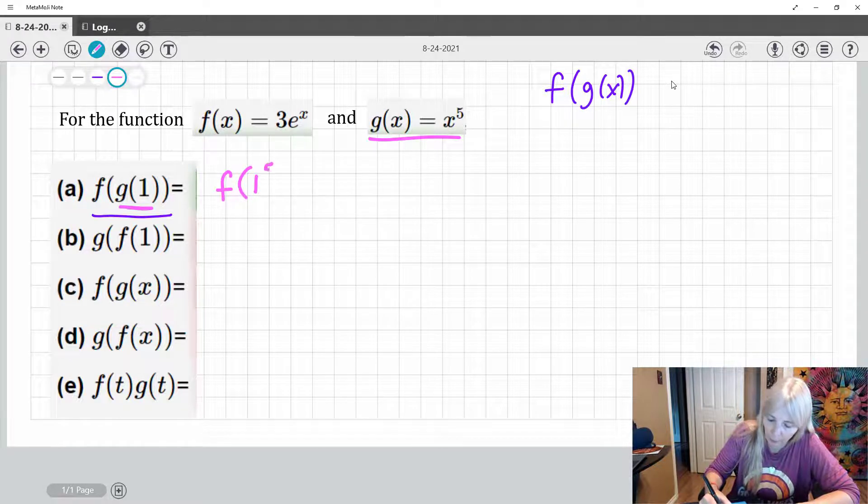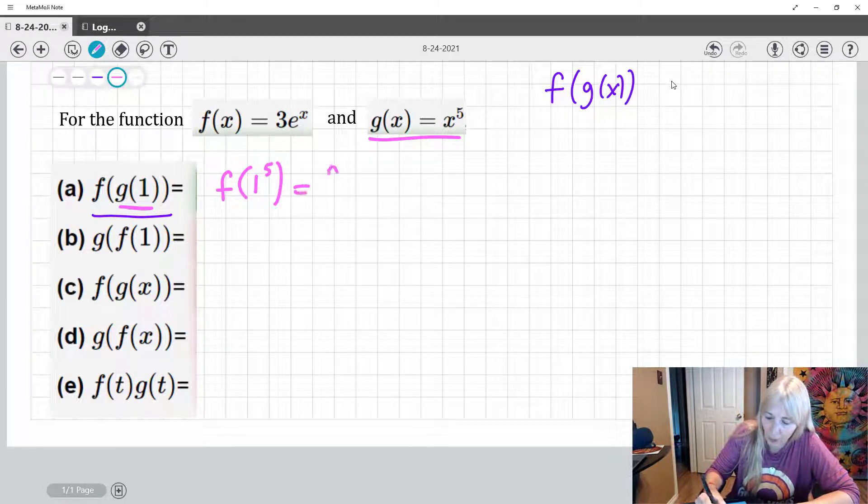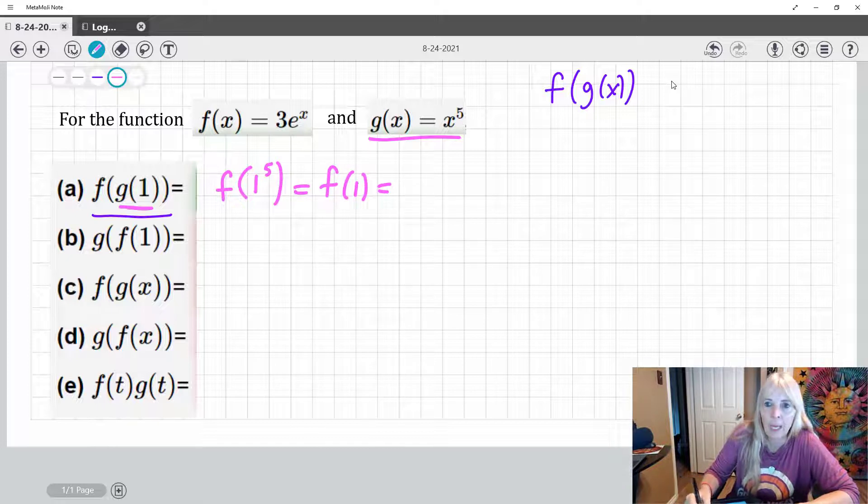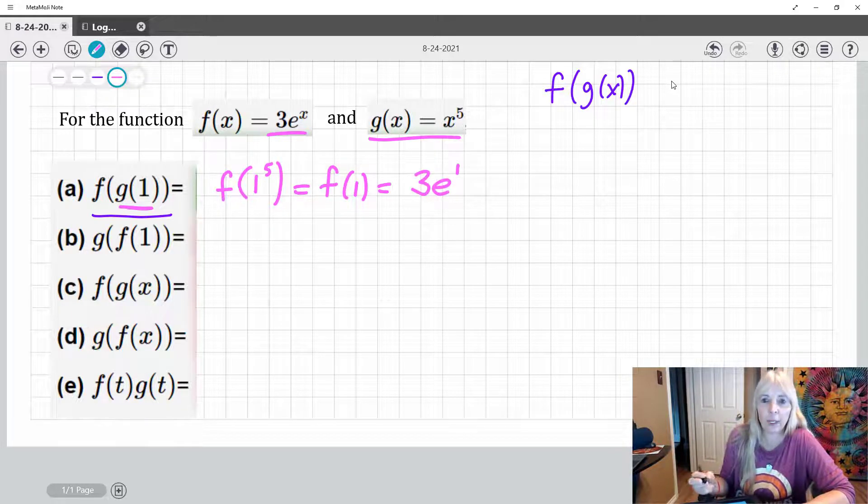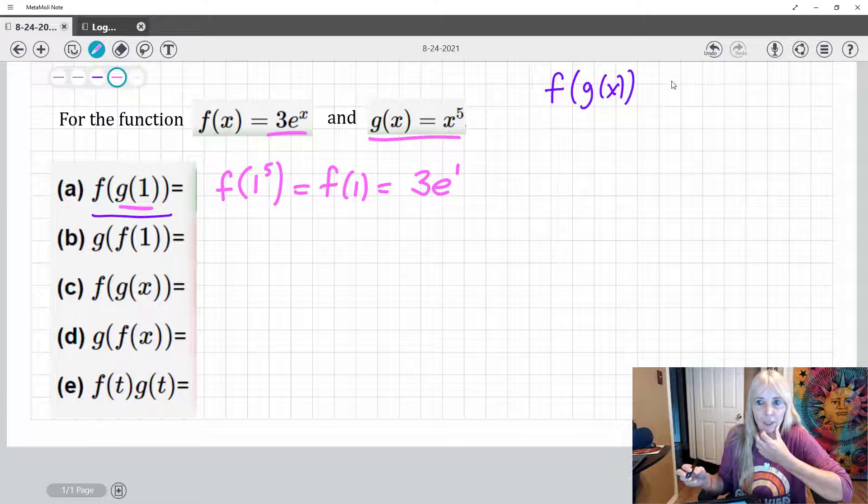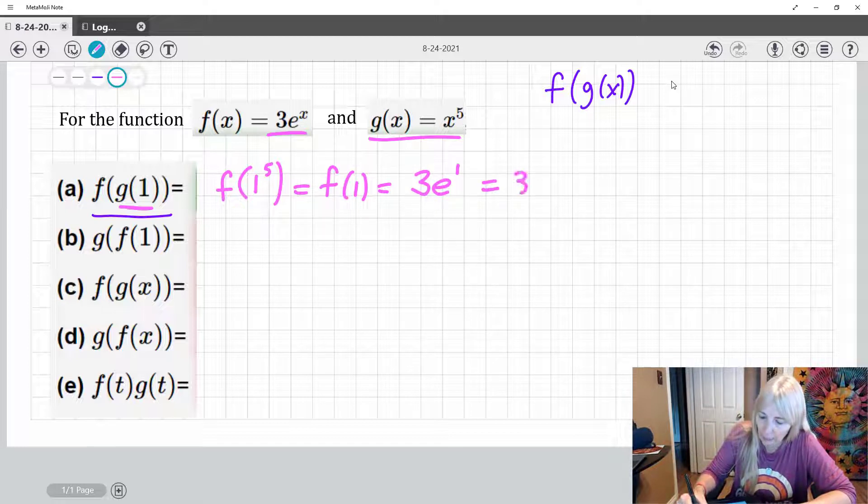Well, that's x to the fifth power. And then I would go ahead and compute that, which of course is just one. All right. And now where I see an x, I'm going to plug in one. That's what f of one means, right? To evaluate the function for one. And I get my answer.